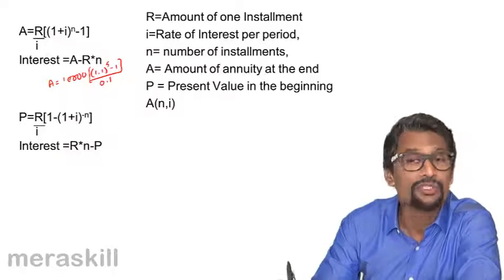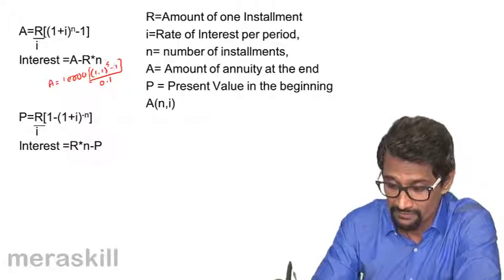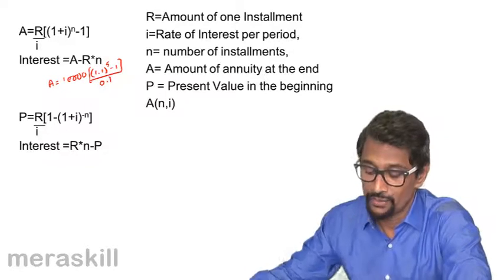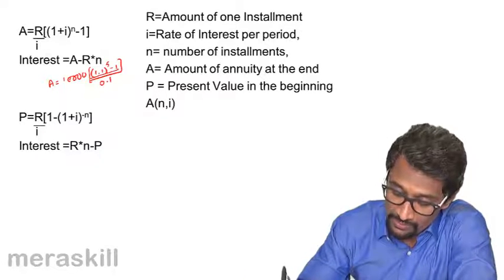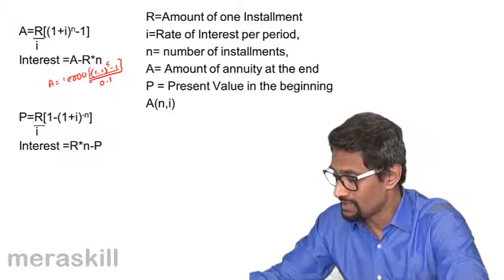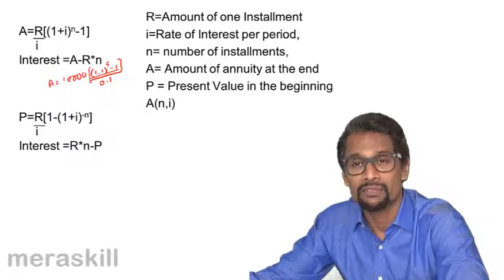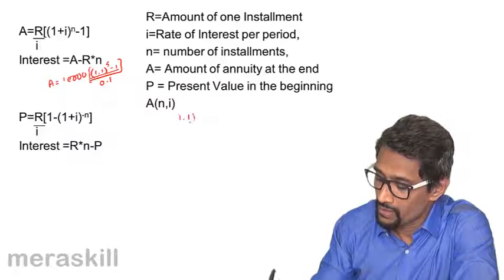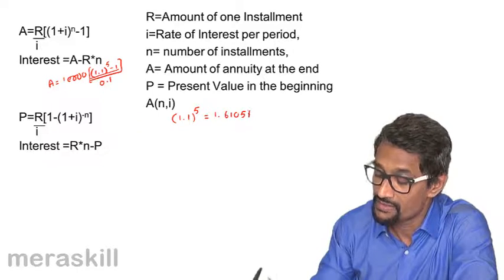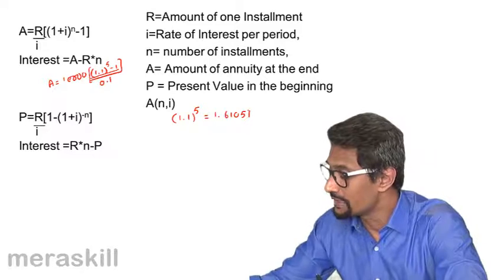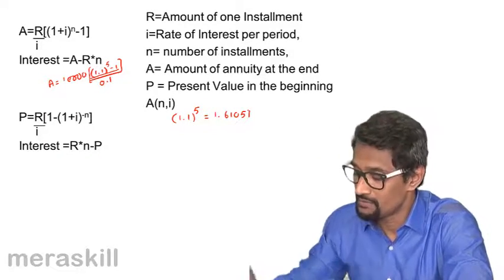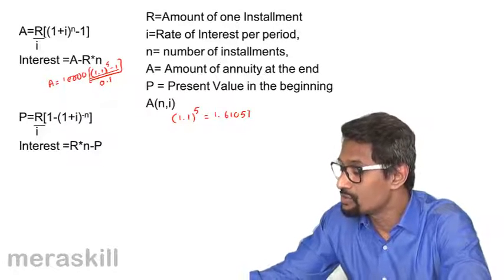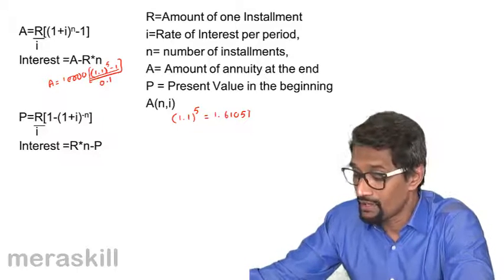We have this formula: 10,000 into 1.1 raised to 5 minus 1 — there are 5 installments — divided by 0.1. To calculate this, we start by computing 1.1 raised to 5 using a calculator: key in 1.1 and multiply it by itself — twice, three times, four times, five times. 1.1 raised to 5 equals 1.61051, so minus 1 gives 0.61051.